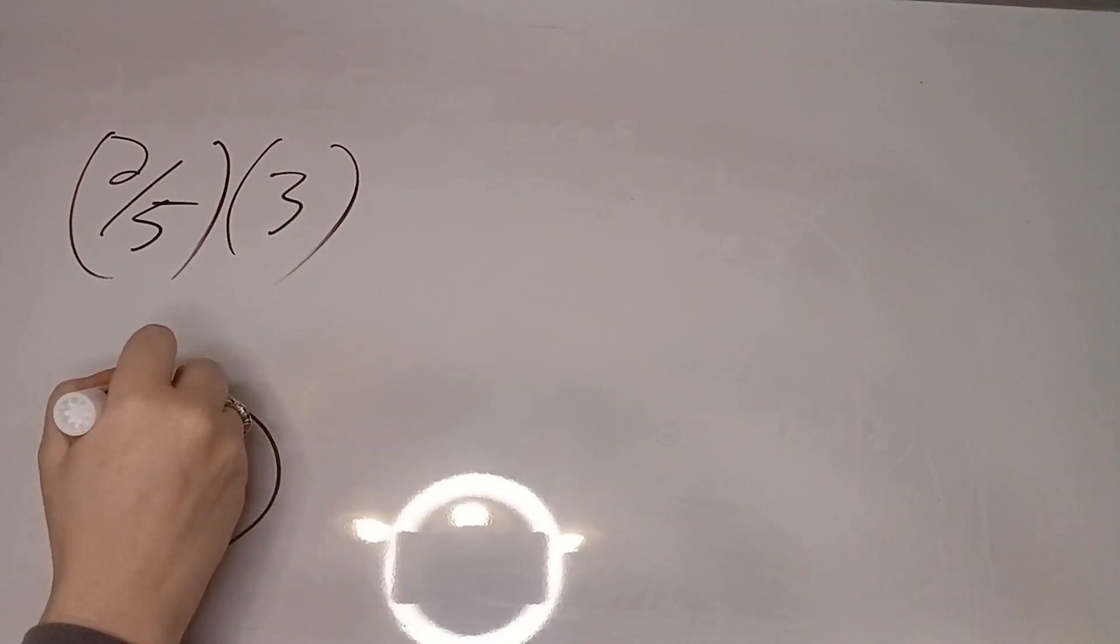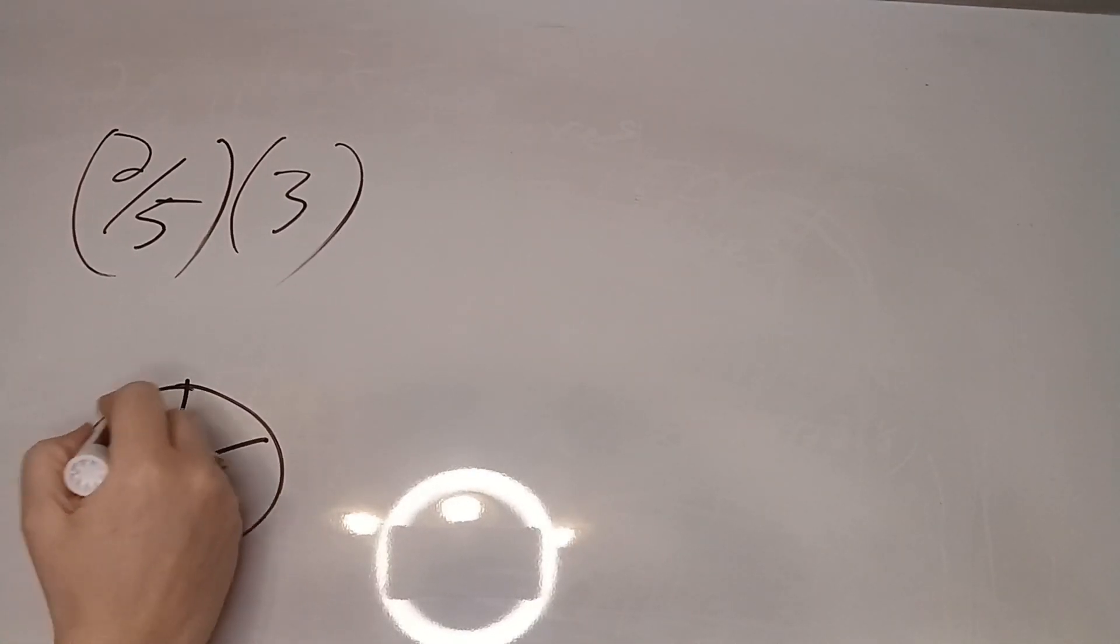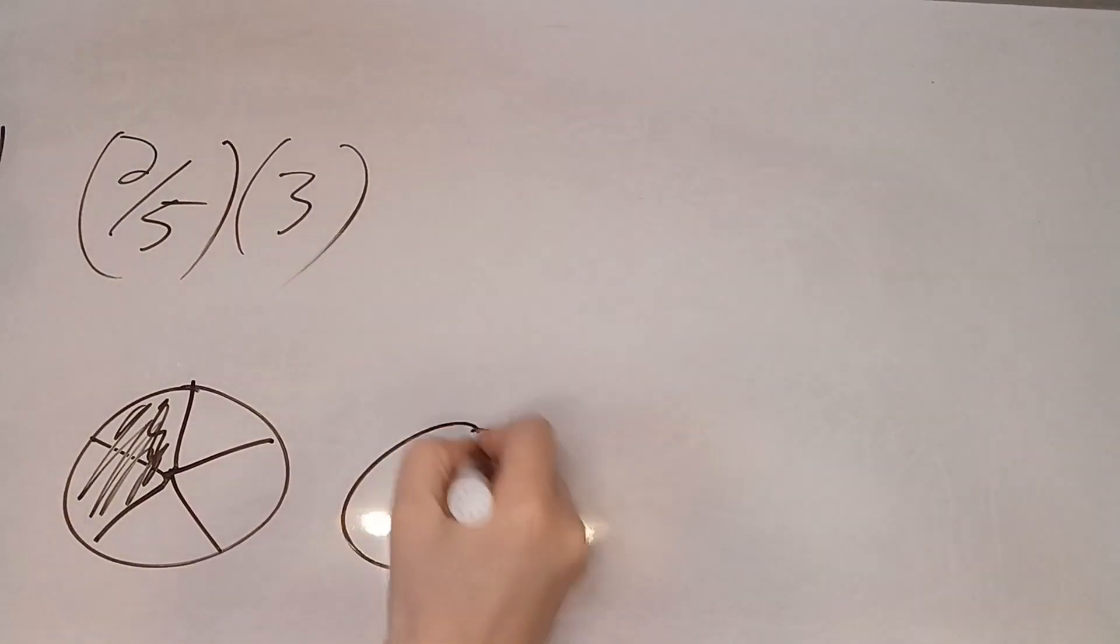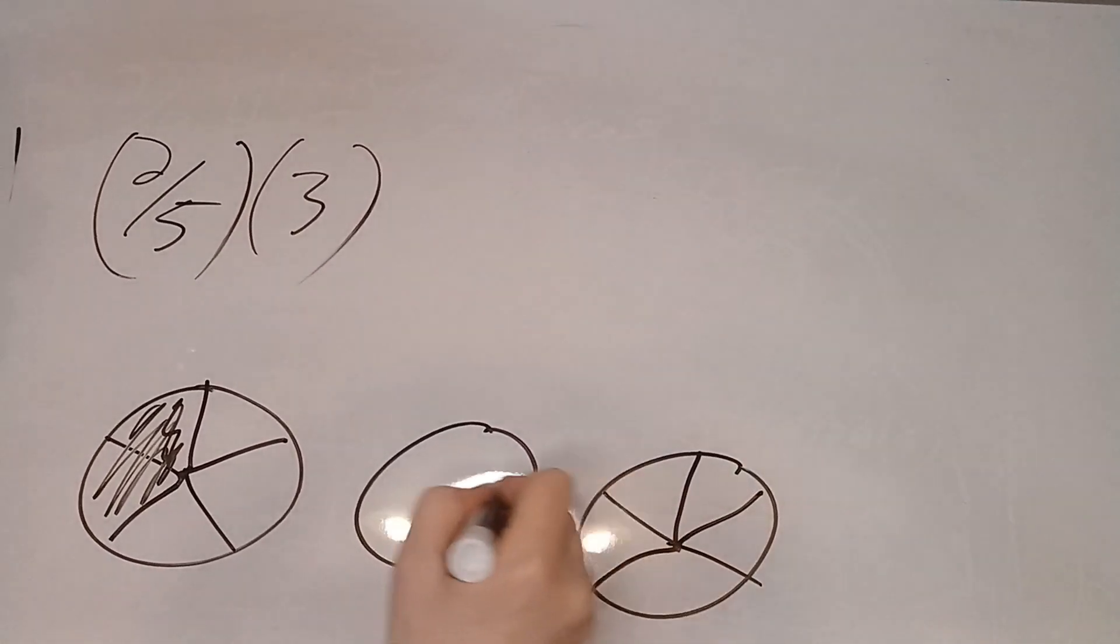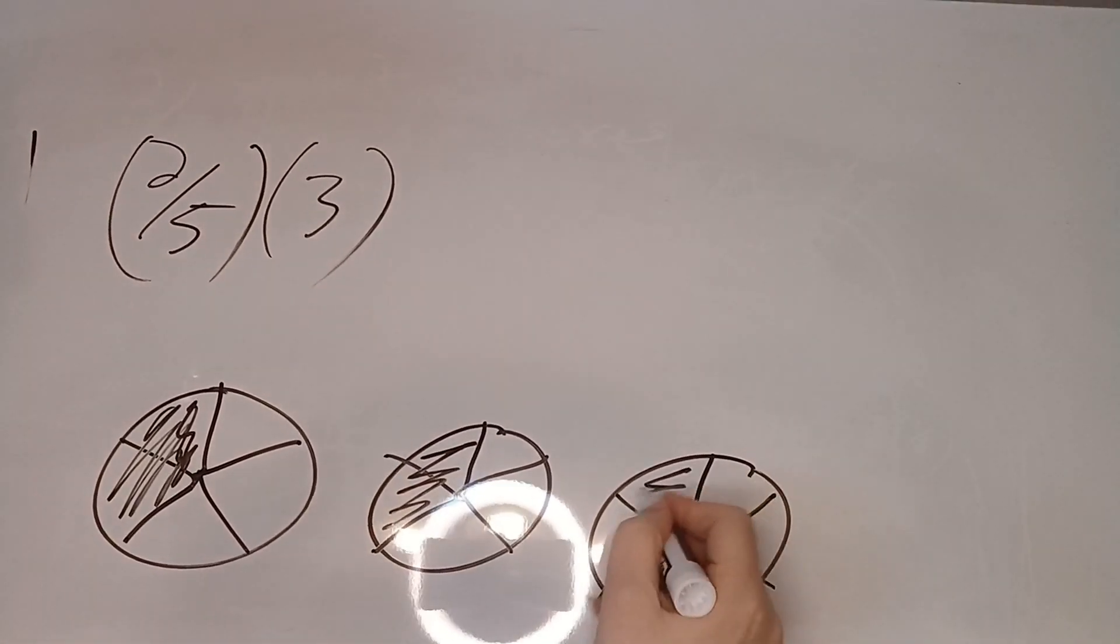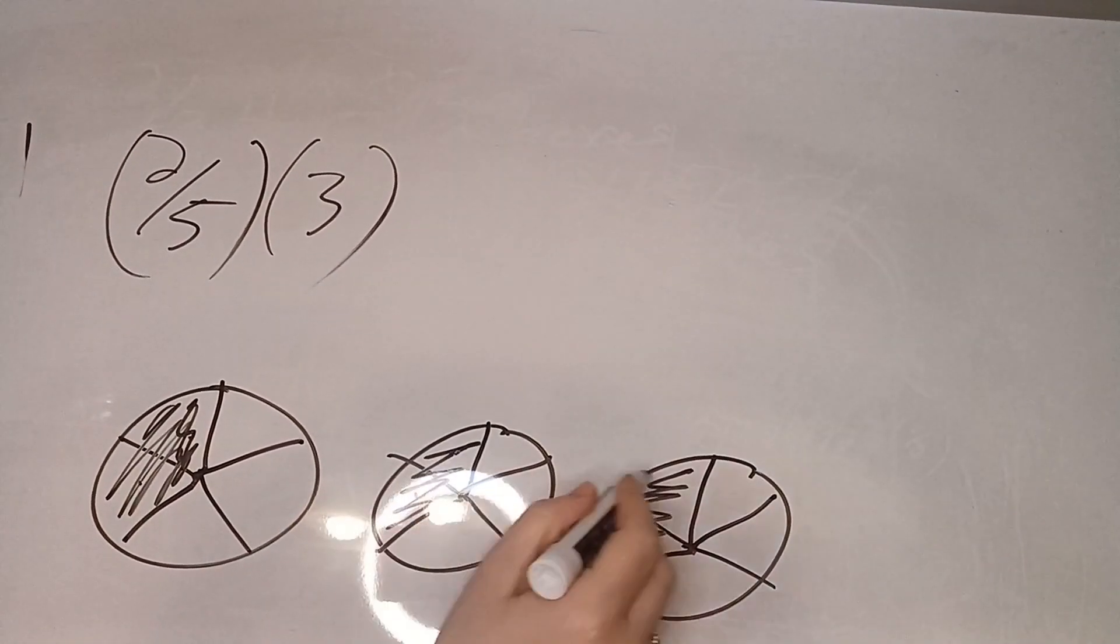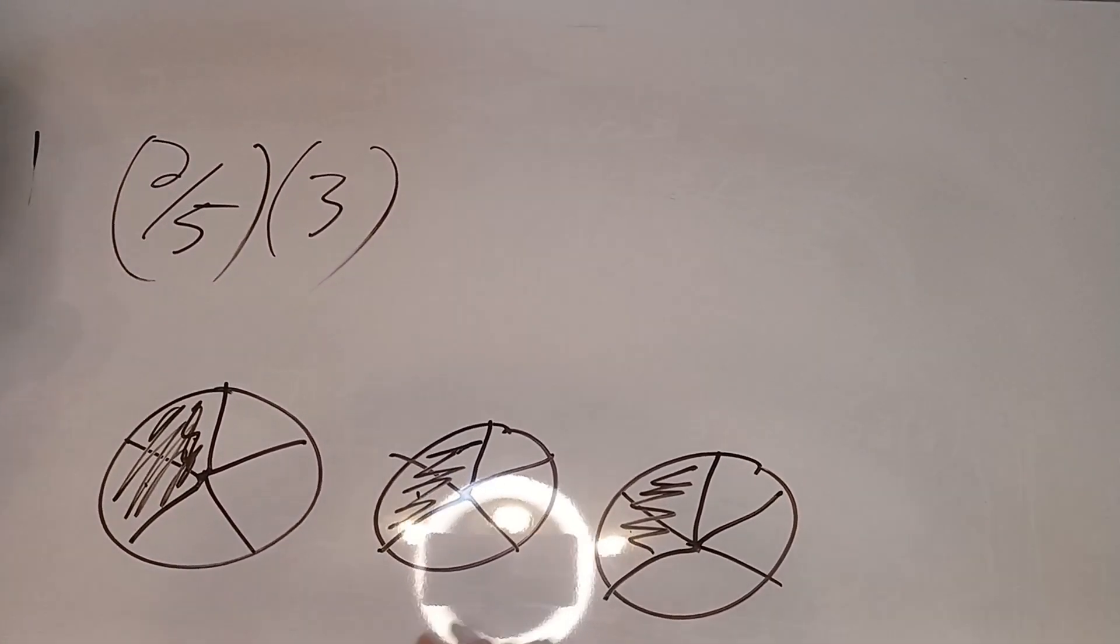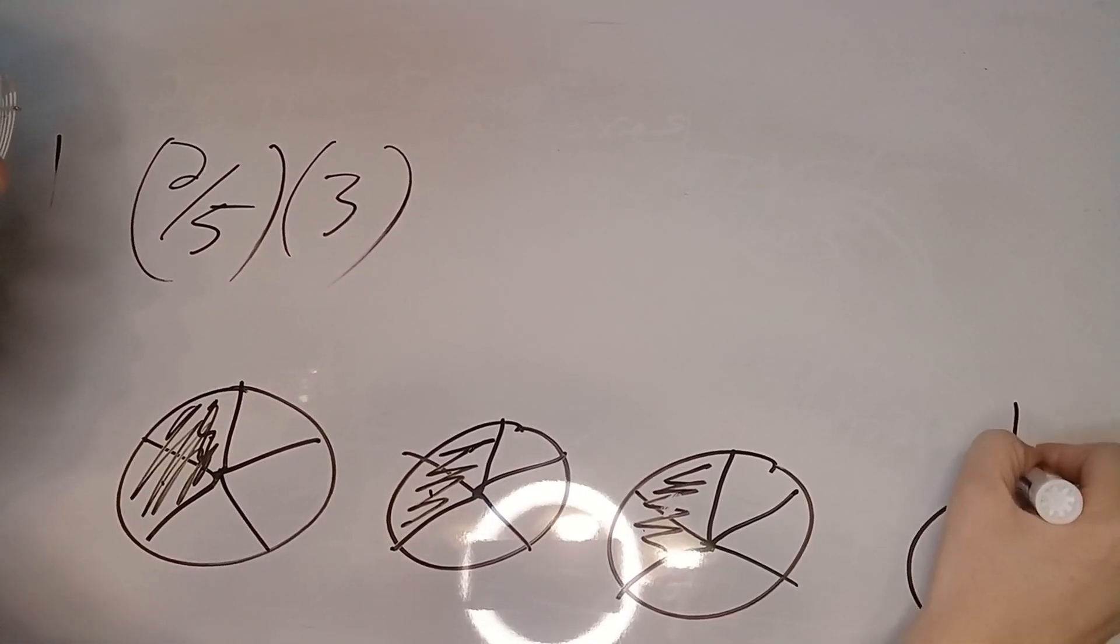Well, two fifths. Here's one, here's a whole. So we got two fifths, right? Times three. That means we have two more that are exactly the same, because that's what multiplying is, right? So that means we've got one, two, three, four, five, six fifths. Okay? So that gives us a whole one and one fifth.